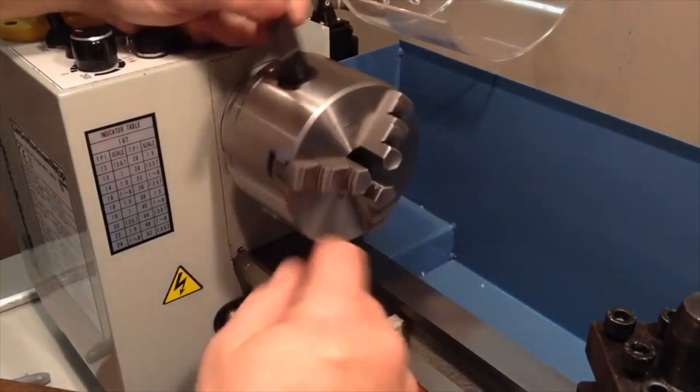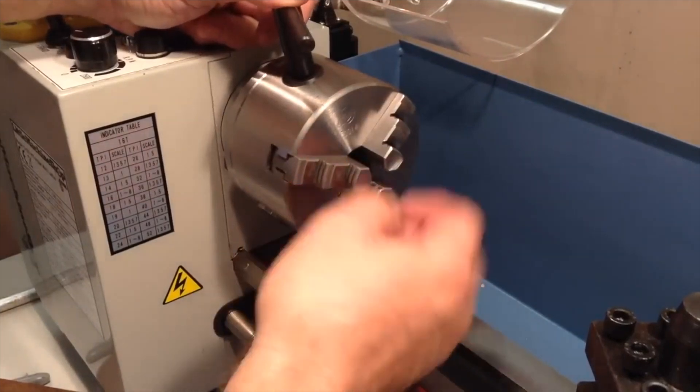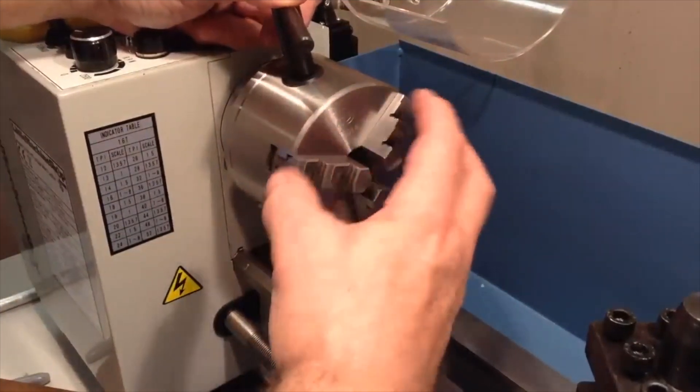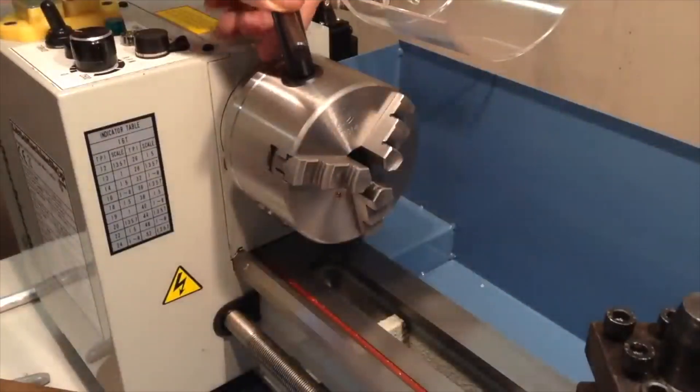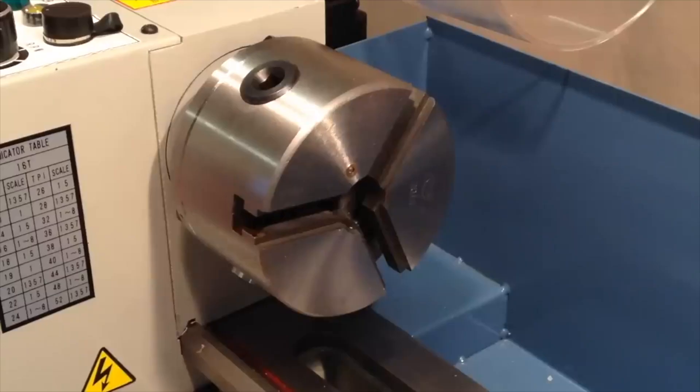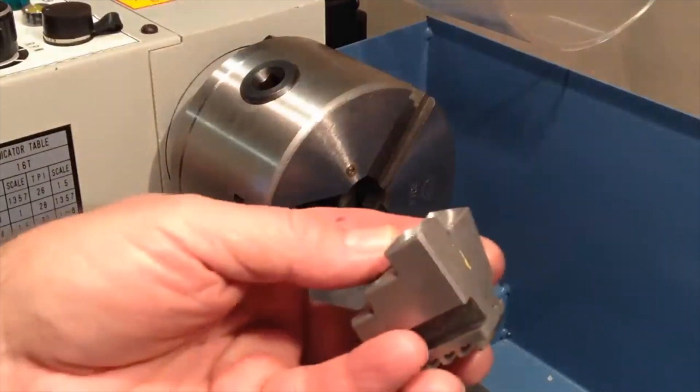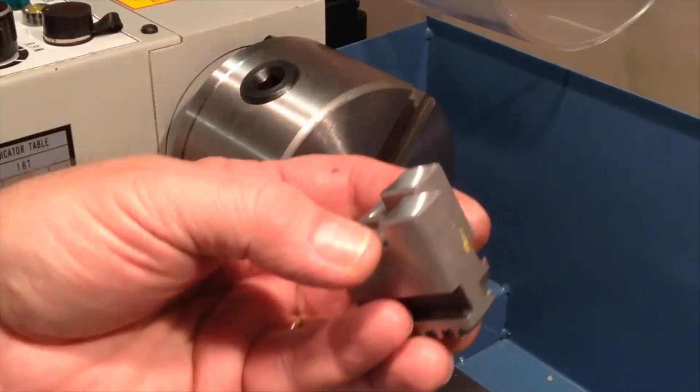So there are actually two sets of these raised areas here that you can use on the jaws for that purpose. So you could hold a fairly large work piece, maybe something four or five inches in diameter using that method. Now the lathe comes with this alternate set of jaws called the outside jaws.